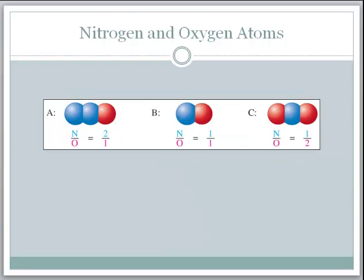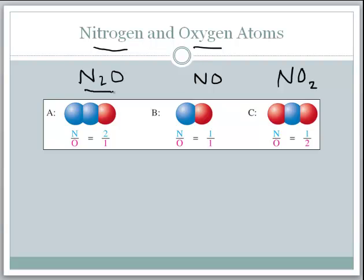The law of multiple proportions is the one that gives some people trouble. It says: if you have more than one molecule made up of the same atoms — for example, nitrogen and oxygen can combine to form N₂O, NO, or NO₂ — if you found the ratio of grams of nitrogen to one gram of oxygen in one compound, and did the same for another compound made of the same two atoms, and then took the ratio of those two values, you would get a whole number.